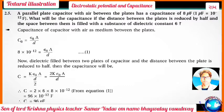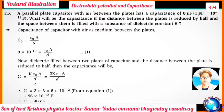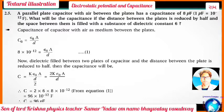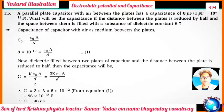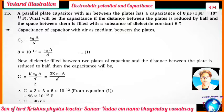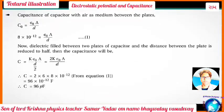A parallel plate capacitor with air between the plates has capacitance of 8 picofarads (1 picofarad = 10⁻¹² farad). What will be the capacitance if the distance between the plates is reduced by half and the space is filled with a dielectric of constant K = 6? Initial capacitance C₀ = ε₀A/d = 8×10⁻¹² F. New capacitance C = Kε₀A/(d/2) = 2Kε₀A/d = 2×6×8×10⁻¹² = 96×10⁻¹² farad = 96 picofarads.